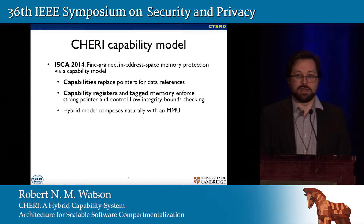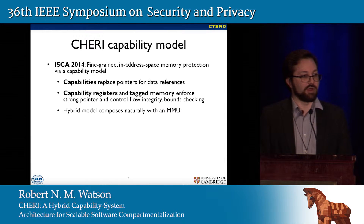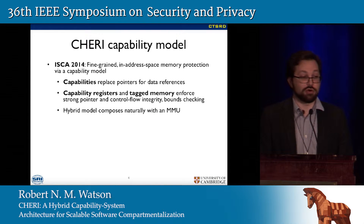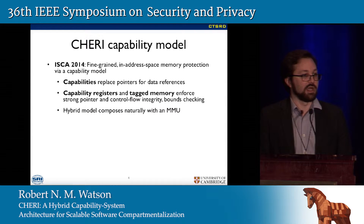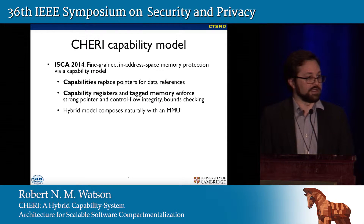We gradually shifted pointers out of the general-purpose register file and into a capability register file that offered monotonic decreases in rights and other capability-like properties. We also provided tagged memory that allows capabilities to maintain their integrity when stored outside of the register file in RAM. From this we got, among other things, integrity protection for pointers, extremely strong integrity protection, a measure of control flow integrity, and bounds checking — the ability to prevent overflows of buffers and related kinds of problems.